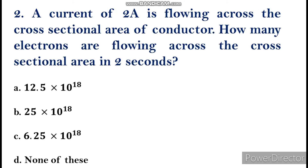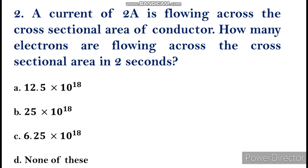Let's see the second question. A current of 2 ampere is flowing across the cross-sectional area of a conductor. How many electrons are flowing across the cross-sectional area in 2 seconds? We know current I is given by Q divided by T.